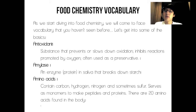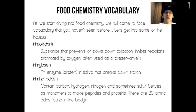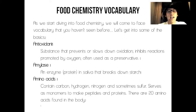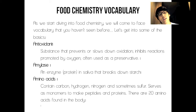Here are some key terms. Antioxidants are substances that prevent or slow down oxidation, inhibiting reactions promoted by oxygen, and are often used as a preservative. Amylase is an enzyme or protein in the saliva that breaks down starch. Amino acids contain carbon, hydrogen, nitrogen, and sometimes sulfur, and serve as monomers to make peptides and proteins. There are 20 amino acids found in the body.